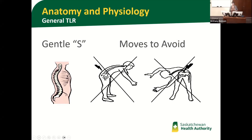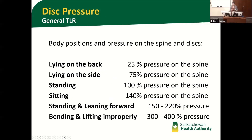Try to avoid bending at the waist and bending and twisting. These are really hard on the spine — try to maintain the nice gentle S-curve of the spine. When lying on your back at night, you're putting 25% pressure on your spine and discs. Rolling on your side increases that to 75%. Standing is 100%, and sitting is 140% because the load is displaced through a smaller area. Bending and lifting inappropriately puts 300 to 400% pressure on your spine and discs — that includes the weight of your torso and head.